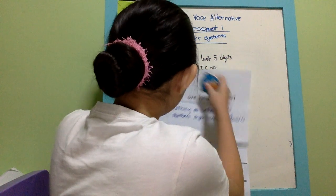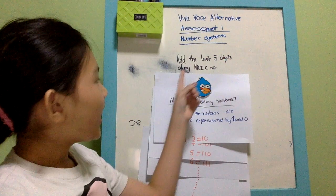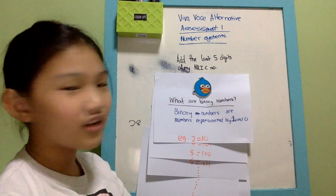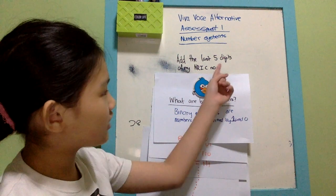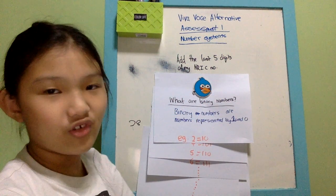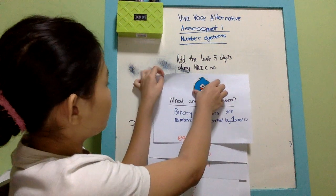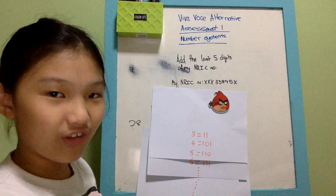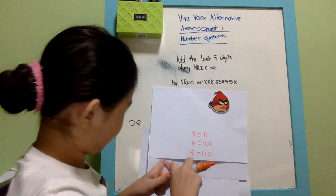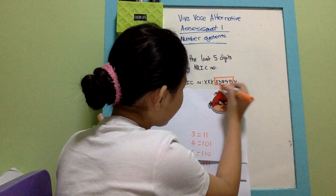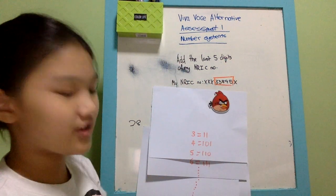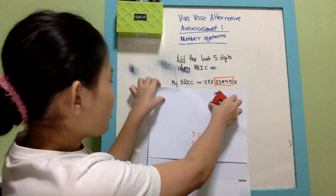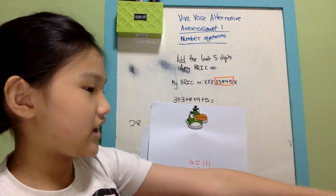I was given two tasks. The first task is to add the last five digits of my NRIC number. I won't reveal every digit — only the last five — and I won't reveal the very last one either. So the number we are looking at is my partially revealed NRIC, and the five digits are: 3, 3, 8, 9, 5.